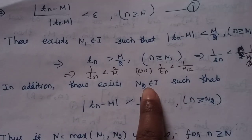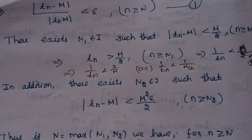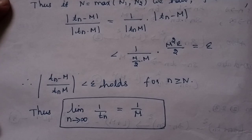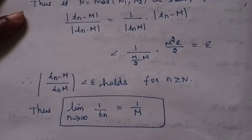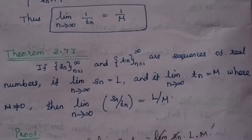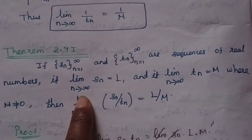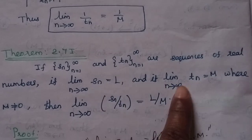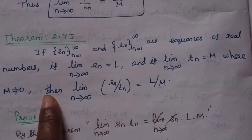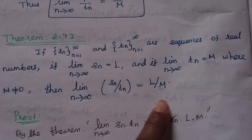We find N as the maximum of N1 and N2 and we find out the required result. If sequence sn and sequence tn are sequences of real numbers, if limit n tends to infinity of sn equals L and limit n tends to infinity of tn equals m, where m is not equal to 0, then limit n tends to infinity of sn by tn equals L by M.